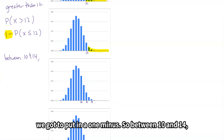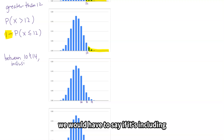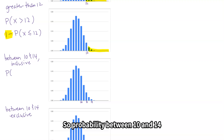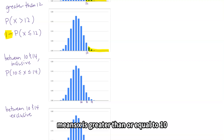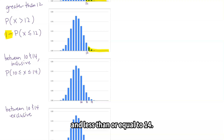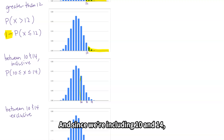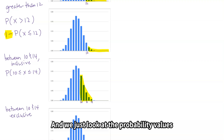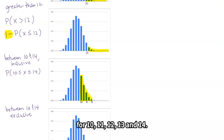The greater-thans and the at-leasts require a 1 minus. For between 10 and 14, we have to specify whether we're including 10 and 14 or excluding them, so we'll look at both. The probability between 10 and 14 means x ≥ 10 and x ≤ 14, and since we're including 10 and 14, we grab those bars — probability values for 10, 11, 12, 13, and 14.